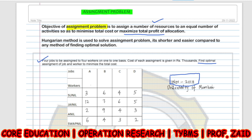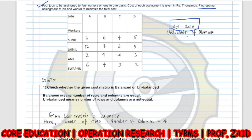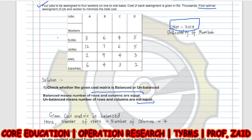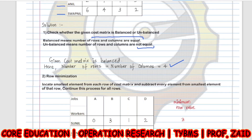This question was asked in November 2018 at the University of Mumbai. Let's begin with the solution. First, we have to check whether the matrix is balanced or unbalanced. Balanced means the number of rows and columns are equal; unbalanced means they are not equal. We have four rows and four columns — A, B, C, and D — so four rows equals four columns, meaning the cost matrix is balanced.